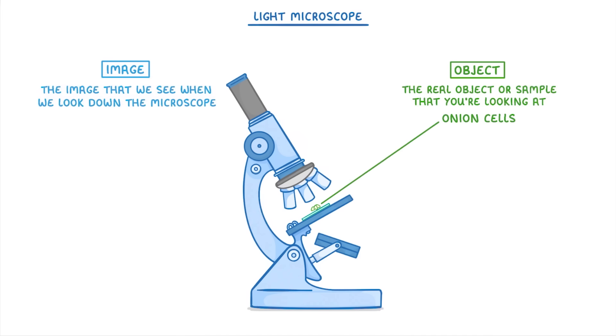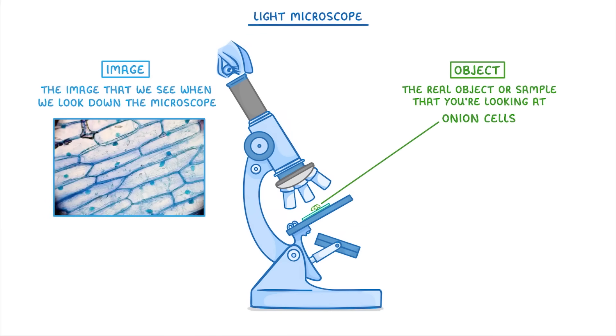The term image on the other hand refers to the image that we see when we look down the microscope. For example if we were to look down this microscope we might see something like this, so this would be our image of the onion cells whereas the object is the actual onion cells that are sitting there on the microscope slide. So be really careful not to get these two terms confused.